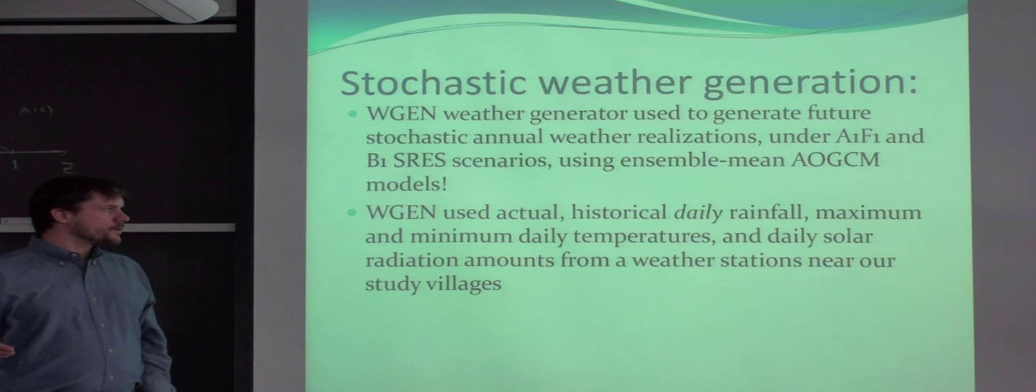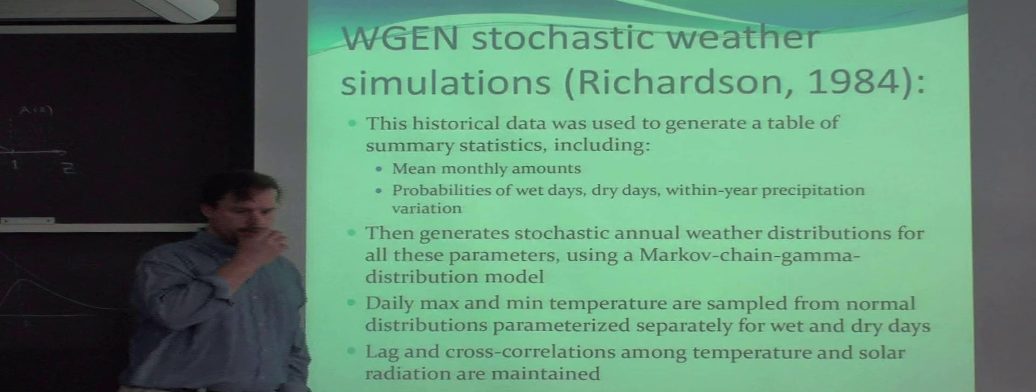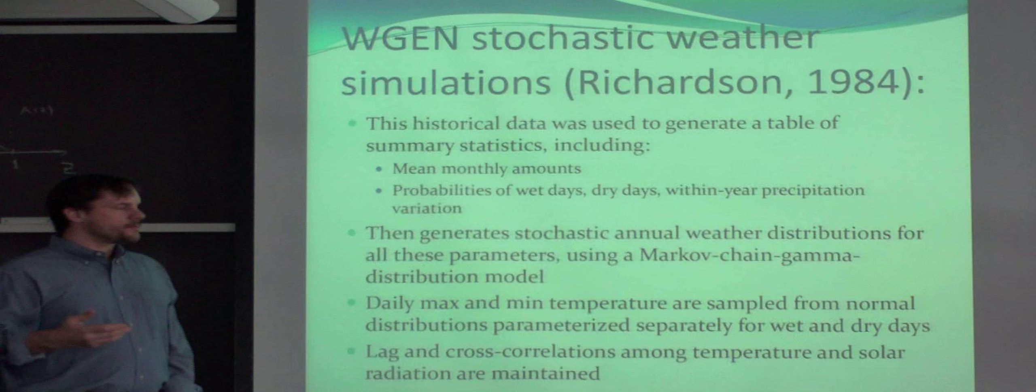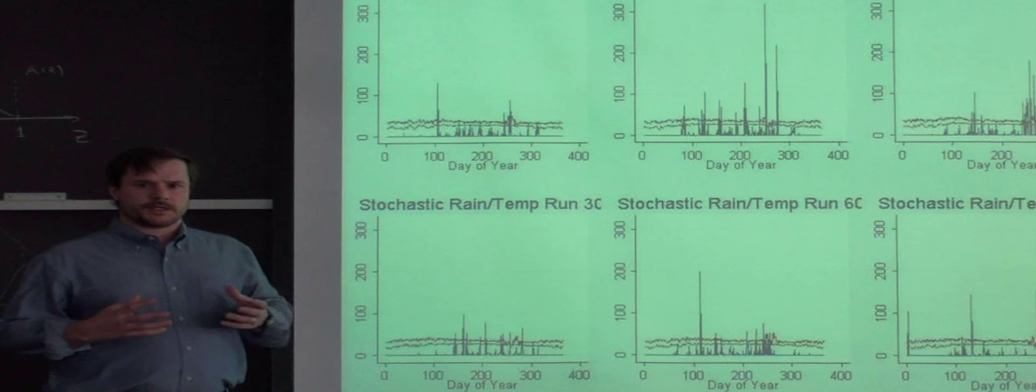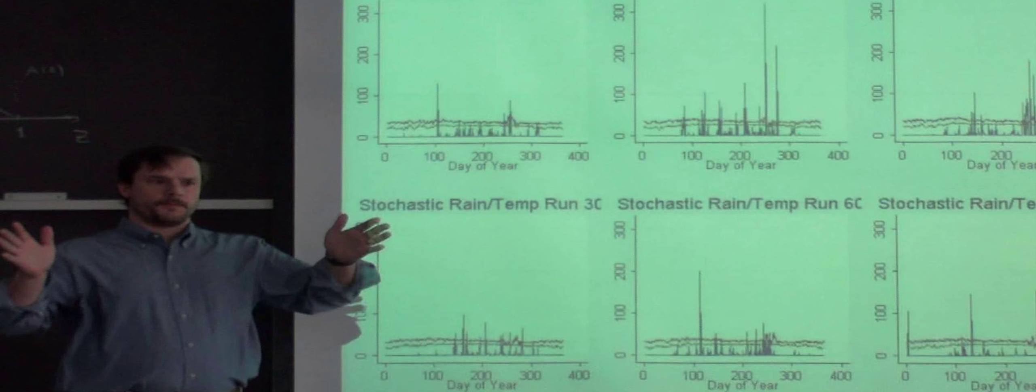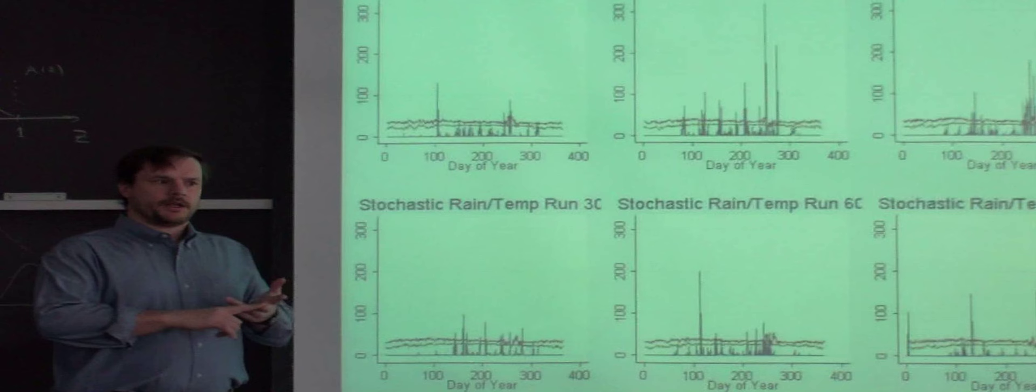So now we needed a way to simulate future weather based on these economic scenarios and global climate models. This is something called the WGEN, Stochastic Weather Generator. It uses Markov chain gamma distribution model. What it first does is it looks at historical data. We're able to use this weather generator to generate stochastic simulations. The way the model works is it first takes 30 years of historical data, and it creates a large table of summary statistics describing both the monthly mean amounts and also intercorrelations between variables, the probability of dry days, the probability of wet days. And then it uses that to generate stochastic weather.